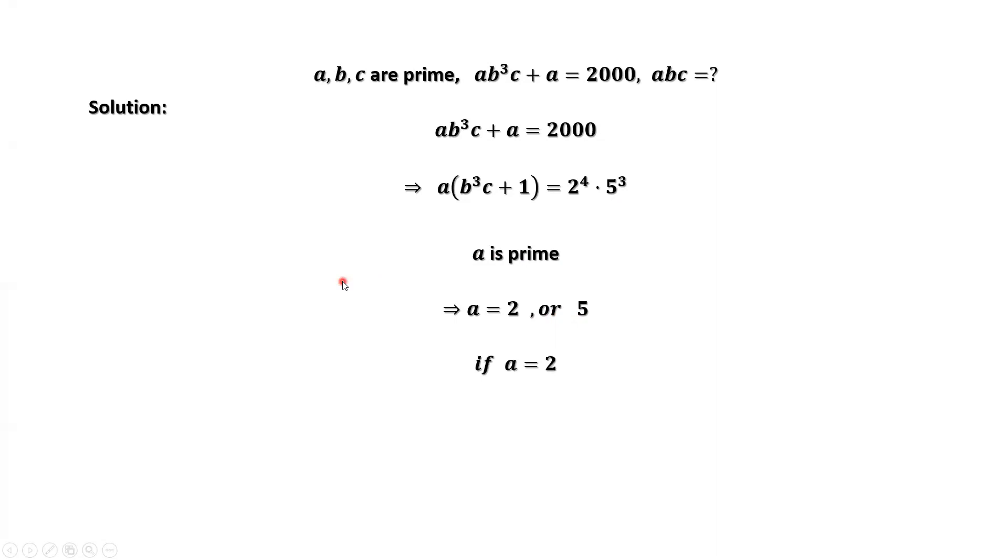If A equals 2, we replace A by 2 here. The right-hand side is 2000. Both sides divided by 2, we have B to the power 3 times C plus 1 equals 1000. Both sides minus 1, we have B to the power 3 times C equals 999.